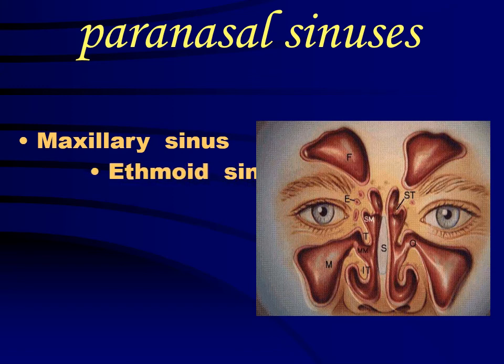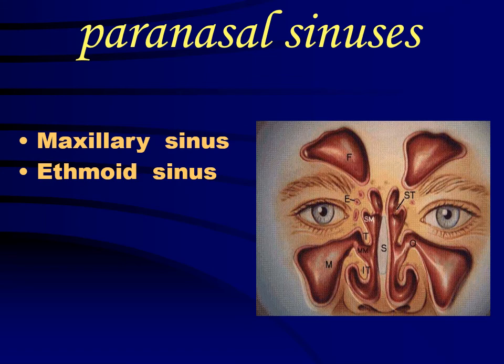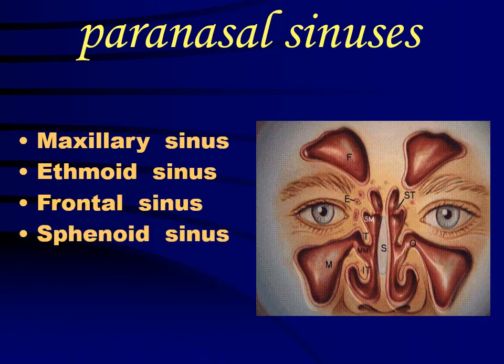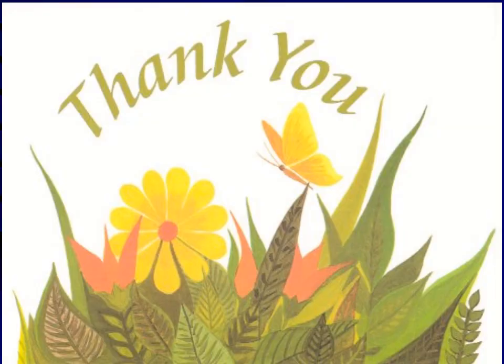In the paranasal sinuses, clearly mentioned here are: maxillary sinuses, which are commonly mentioned; then ethmoidal sinuses — as we discussed previously, there are ethmoidal bones; then we have the sphenoidal bone, and here it is clearly shown which part is ethmoidal, which is maxillary, which is sphenoidal, and which comes under frontal sinuses. All of these are visible in this diagram.